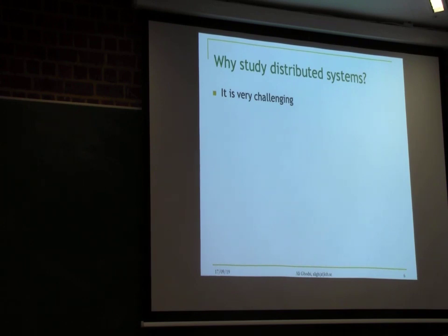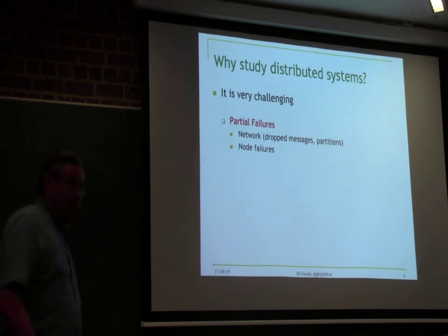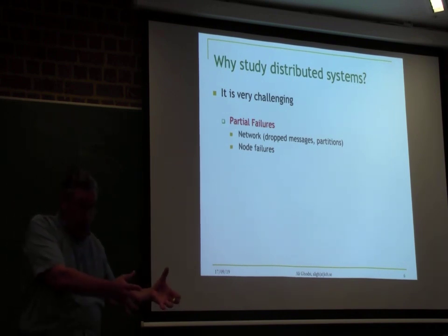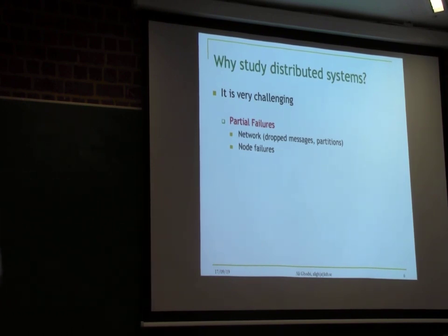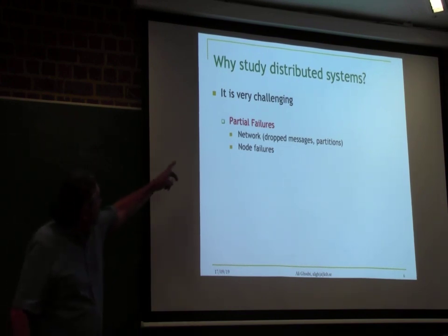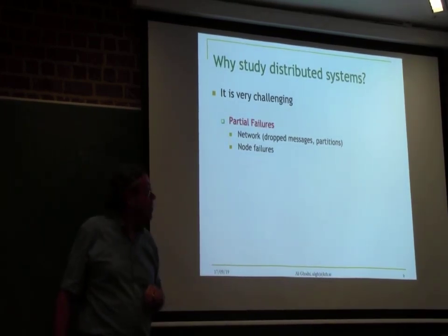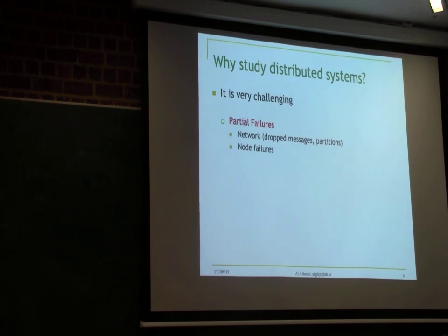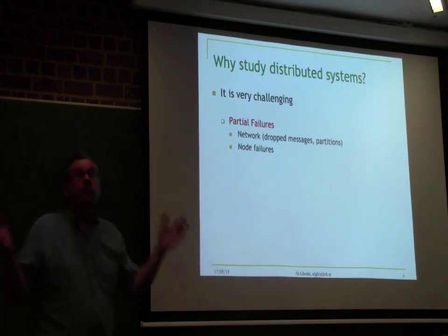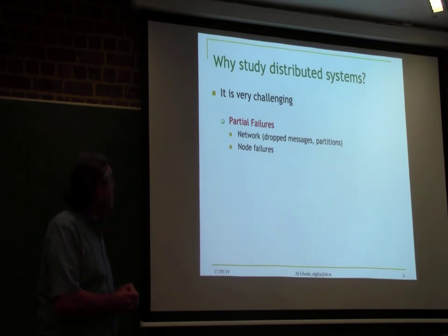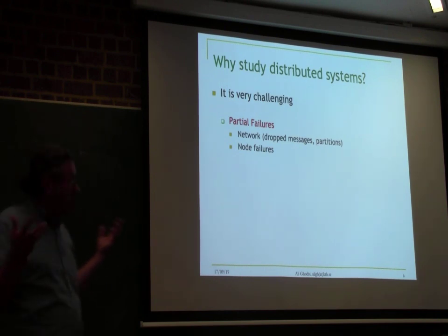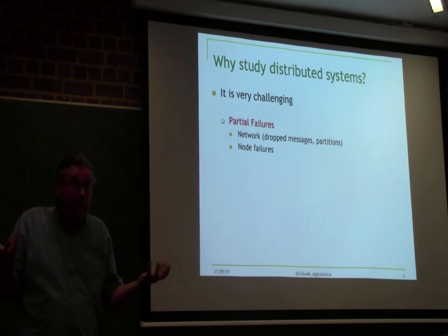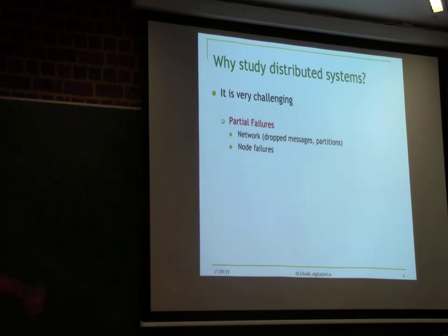But it's actually kind of difficult. If you started learning programming, you start with sequential programs in the first year, then concurrent programs with multiple threads. The next step up is distributed systems. One of the reasons why it's very hard is because of partial failure. When something crashes, it's not the whole system that crashes — only part of the system — and the rest is still running.